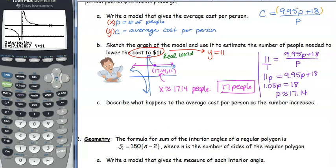Part C. Describe what happens to the average cost per person as the number increases. So we're saying as we have, when we have one person, we know they're paying that whole $18 charge by themselves. As we have more people, the average cost per person is going down. But, it's going to approach the value of $9.95.